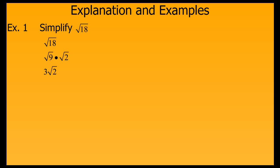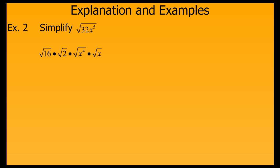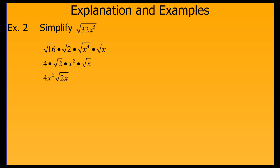This is considered simplified form because 2 does not contain any perfect square factors, a fraction, or a radical in the denominator. For the next example, we want to split 32x to the fifth into factors that include perfect squares. So we split 32 into 16 times 2, and x to the fifth into x to the fourth times x. We can then take the square root of 16 to get 4, and the square root of x to the fourth to get x squared, giving us a simplified form of 4x squared times the square root of 2x.